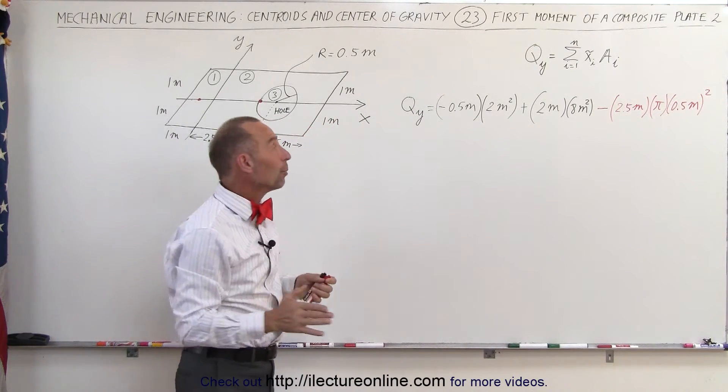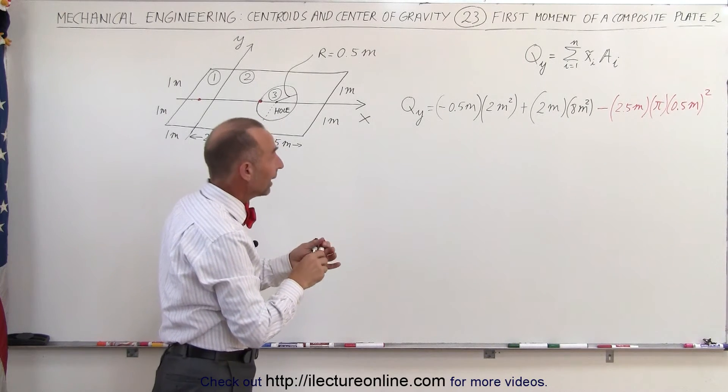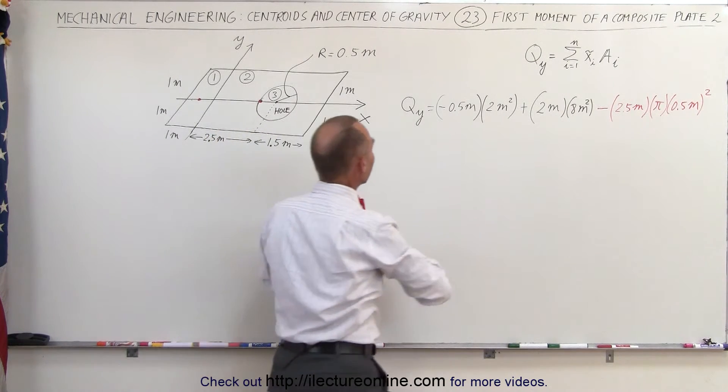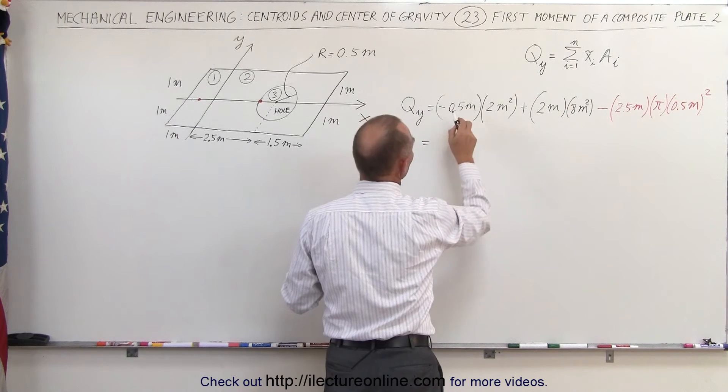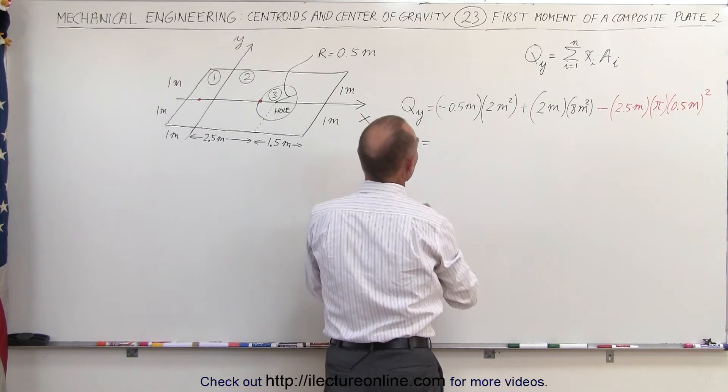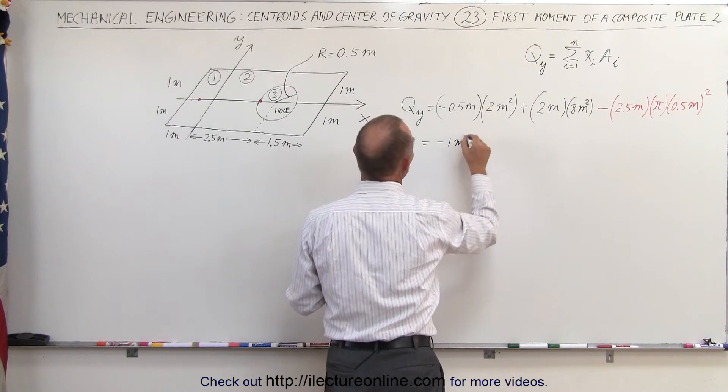That should give us the first moment about the y-axis, so let's go ahead and calculate that. This is equal to 0.5 times 1, that would be negative 1 meter cubed.